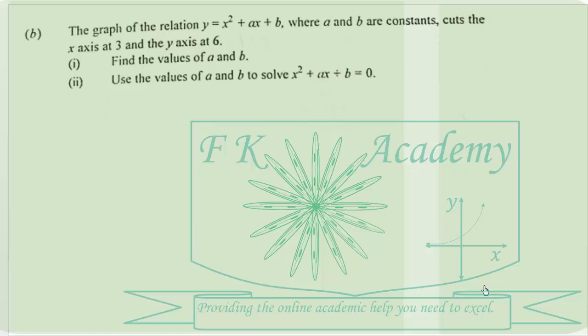For part B, the graph of the relation y equals x squared plus ax plus b, where a and b are constants, cuts the x-axis at 3 and the y-axis at 6. Find the values of a and b, then use the values of a and b to solve the equation x squared plus ax plus b equals zero.